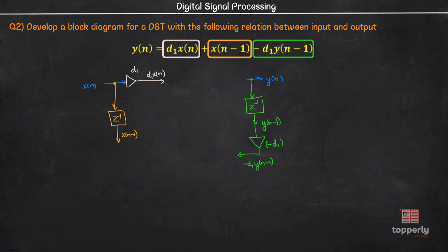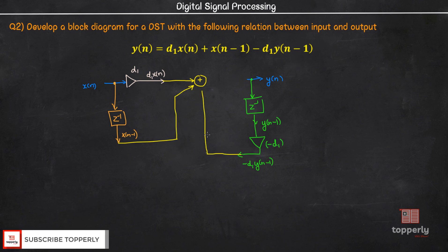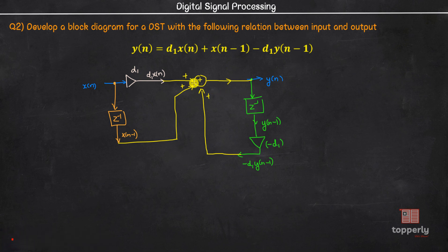We have now implemented all the individual terms of this equation using block diagrams. All we need to do is add them all together using an adder circuit. We draw an adder circuit in the middle, provide all these signals as input, and the output of this adder circuit will be y of n. This is one of the possible block diagram representations for the relation in question.